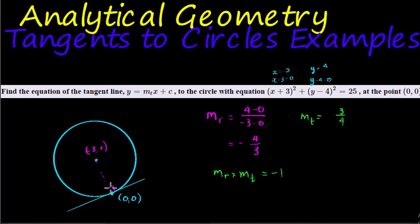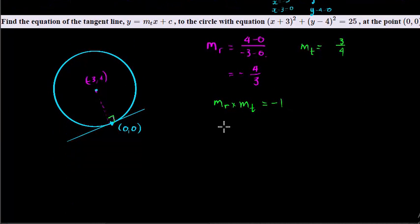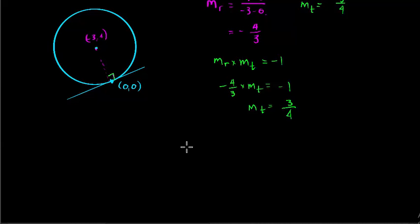negative 1. Why? Because they are perpendicular. That is the property of all perpendicular gradients. So if you substitute the radius in as negative 4 over 3 times gradient of tangent, that's exactly what you would have gotten. Multiply both sides by 3, divide both sides by negative 4, and you get the gradient of the tangent is 3 over 4. Okay, that being said, let's put in what we have so far.